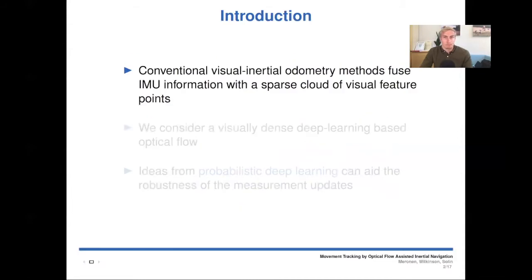Some introduction. Conventional visual inertial odometry methods fuse IMU information with a sparse cloud of visual feature points, but here we consider a visually dense deep learning based optical flow.